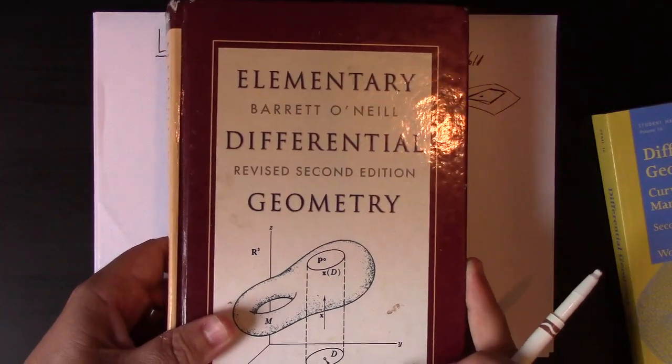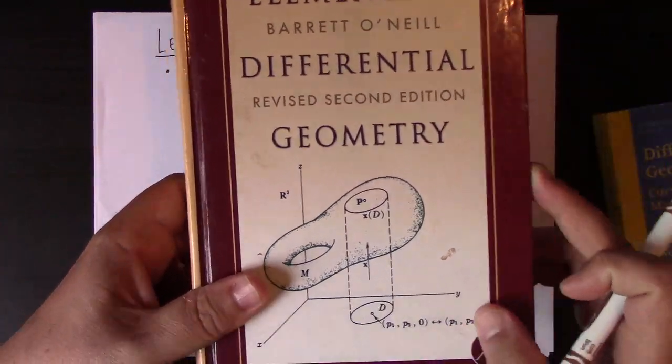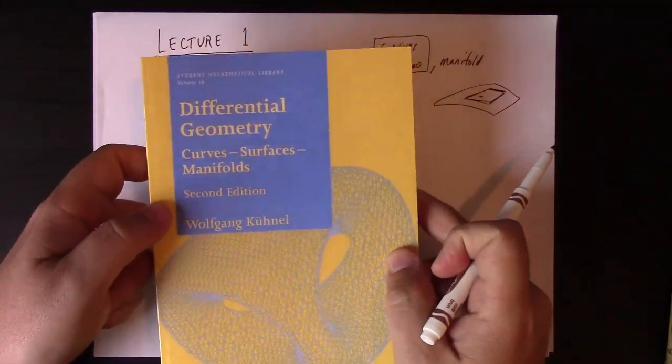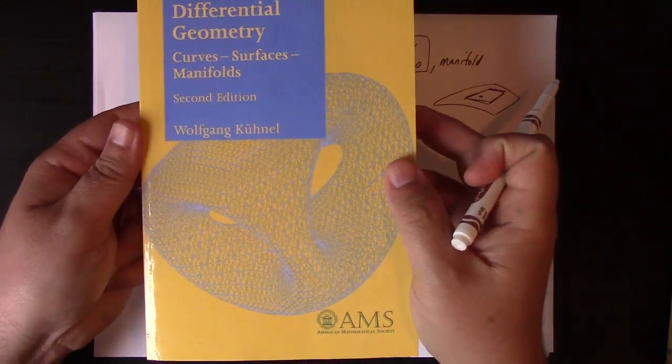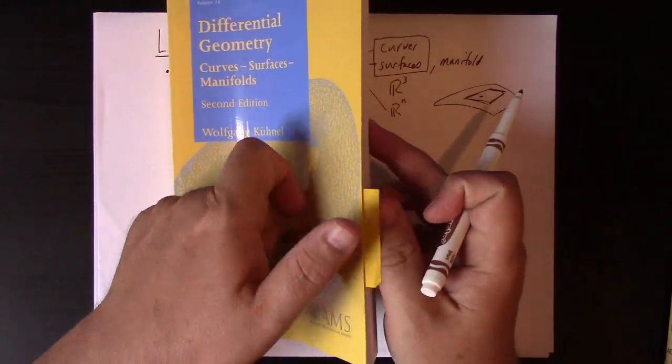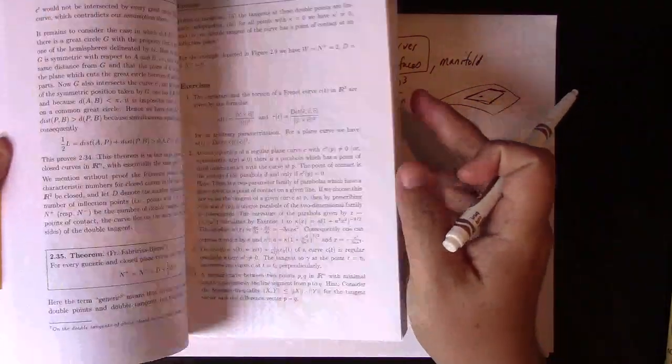And also, to add a little n-dimensional flair, I'll be also doing some things with this Differential Geometry of Curves and Surfaces, second edition of Wolfgang Kühnel's book. It's a translation of a German book. It's great, just a great book.